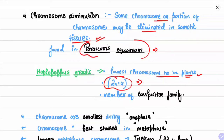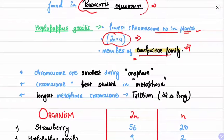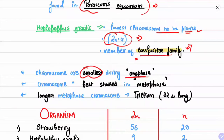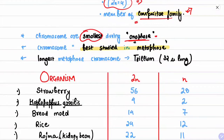Haplopapus gracilis has the lowest chromosome number in plants: 2n equals 4. It is a member of the Compositae family — an important fact many students are unaware of. Chromosomes are smallest during anaphase, not metaphase. Chromosomes are best studied during metaphase, but they are smallest only during anaphase.